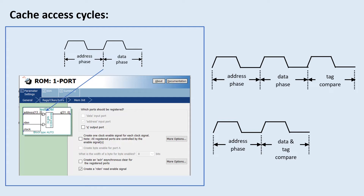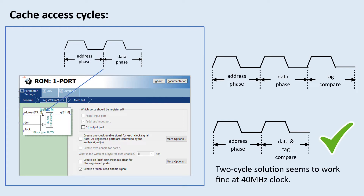In terms of cache access, I used this slide from my previous update for Dhrystone run. As the on-chip memory access takes at least two cycles, I can either make the cache access three cycles or two cycles, with data read and tag compare in the same cycle. Merging data read and tag compare is slower, but it also works fine with 40 MHz processor clock, so I will use two cycles for cache access.